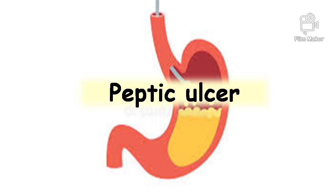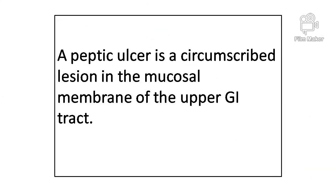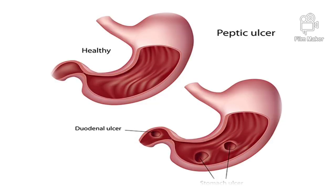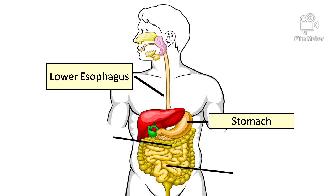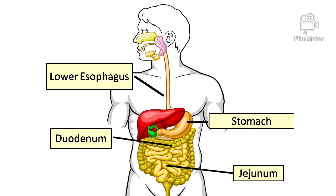Hi guys. Today I will be discussing the pathophysiology of peptic ulcer. A peptic ulcer is a circumscribed lesion in the mucosal membrane of the upper GI tract. Peptic ulcers can develop in the lower esophagus, stomach, duodenum, and jejunum.